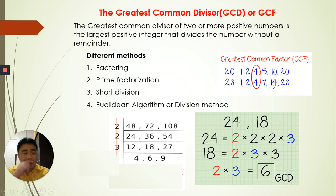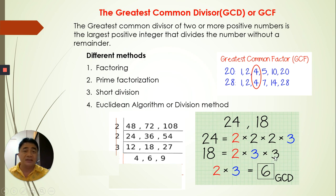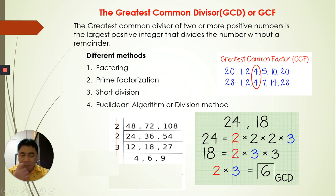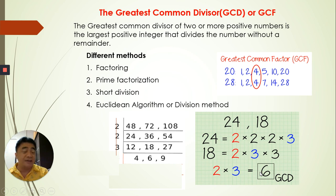For prime factorization, we factorize each number into its prime factors. For 24: 2 times 2 is 4, times 2 is 8, times 3 is 24. For 18: 2 times 3 is 6, times 3 is 18. Then we identify common pairs — this pair and another pair — and multiply the common ones. That gives us the GCF or GCD.